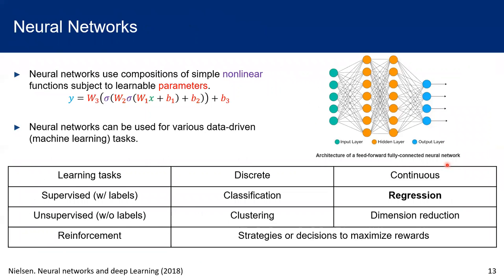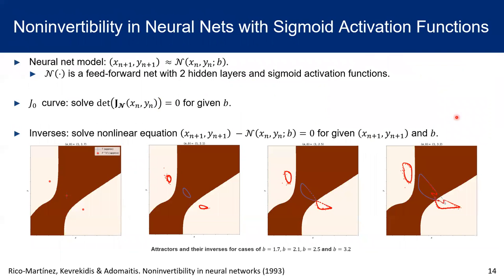Neural networks, working as a tool, have already shown their great potential in solving various data-driven tasks. They use compositions of simple nonlinear functions subject to learnable parameters. For example, in the top right figure, we could see the hidden layer one is the function of the inputs. The hidden layer two is a function of hidden layer one, while the outputs are functions of hidden layer two. In this work, we are considering the performance of the neural network in regression tasks, that is, if it could be used for approximation of some dynamical systems.